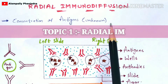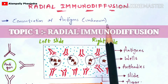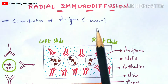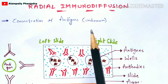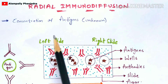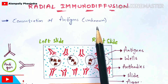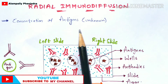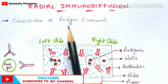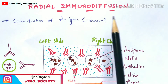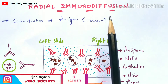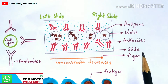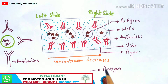Why is this technique of radial immunodiffusion necessary? It is necessary to know the concentration of unknown antigens. So how can you know the concentration of an unknown antigen? By performing the technique called radial immunodiffusion. Let us see how it is performed.